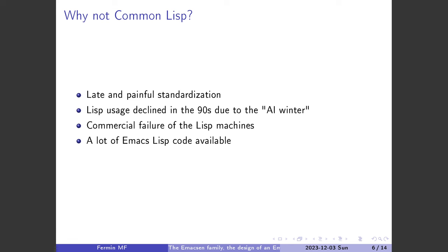These are the reasons I think are important for why Stallman didn't choose Common Lisp. The main reason I think is that Stallman wasn't a big fan of Common Lisp, and he was at the time the main developer and maintainer of Emacs, so he chose not to move to Common Lisp.